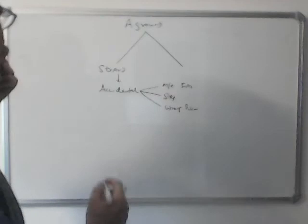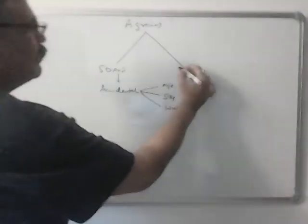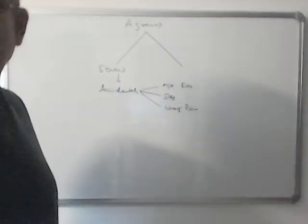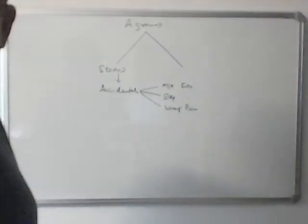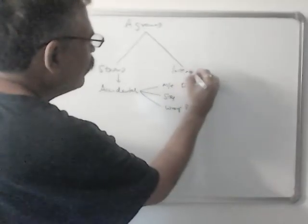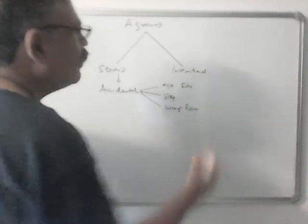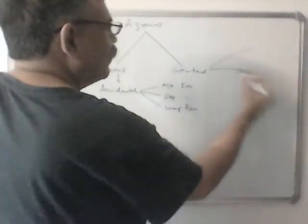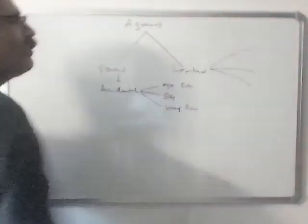And the second one is intentional. This could be three types. Intentionally you want to aground the vessel.